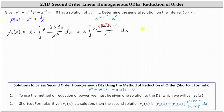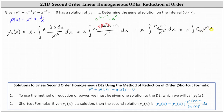So this gives us x times the integral of c sub two times x to the power of negative one, divided by x squared. And x to the power of negative one divided by x squared simplifies to x to the power of negative three, giving us x times the integral of c sub two times x to the power of negative three dx.